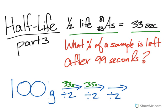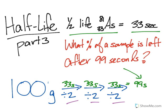33 seconds, another 33 seconds here. If we add all those, we get 99. So this is the amount of time that has elapsed in our problem. So really what we need to do is just divide 100 by 2 three times.